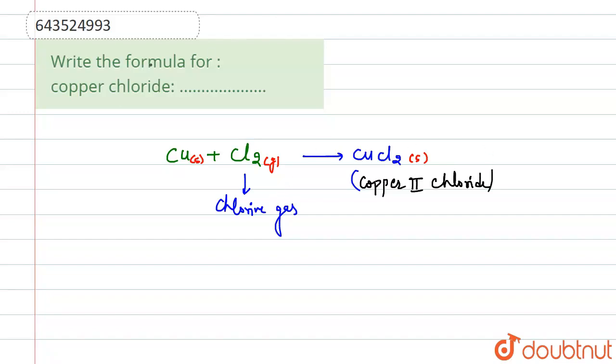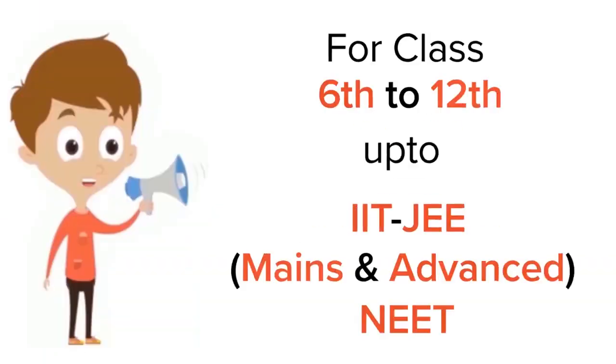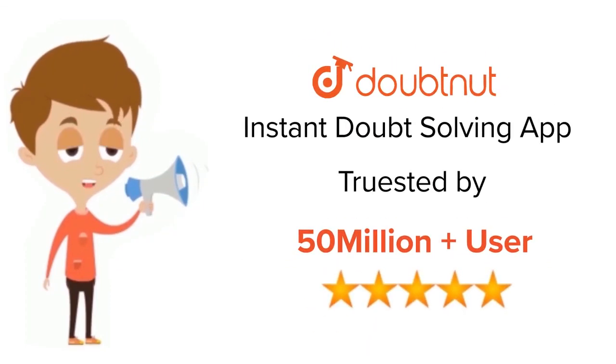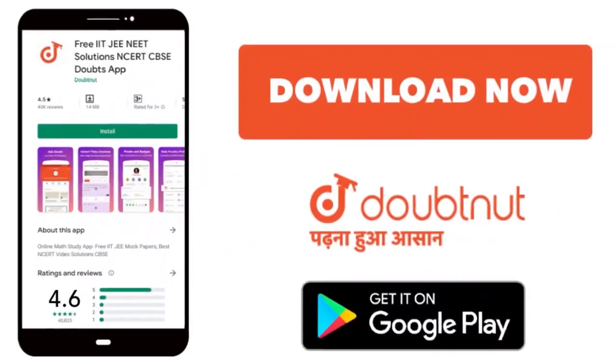So the correct formula for copper chloride is CuCl₂. Thank you. For class 6th to 12th, IIT-JEE and NEET level, trusted by more than 5 crore students. Download Doubtnet app today.